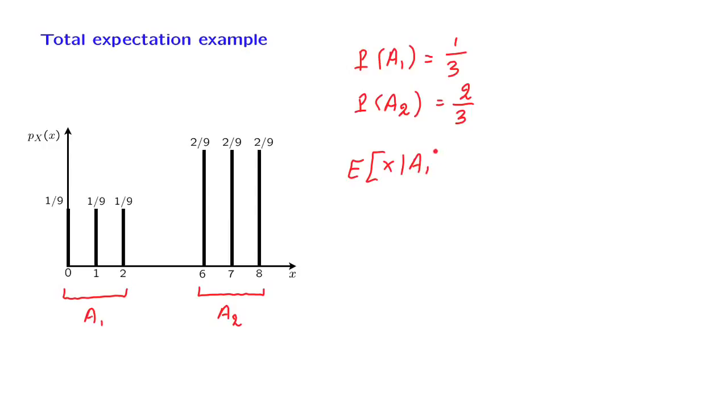How about conditional expectations? In a universe where event A1 has occurred, only these three values are possible. They had equal probabilities, so in the conditional model they will also have equal probabilities, so we will have a uniform distribution over the set 0, 1, 2. By symmetry, the expected value is going to be in the middle, so this expected value is equal to 1. And by a similar argument, the expected value of x under the second scenario is going to be the midpoint of this range, which is equal to 7.